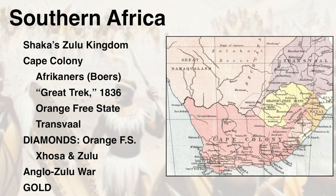Their lands were given then to white ranchers. The discovery of gold in the Transvaal — one of the Boer territories — created a gold rush, and soon enough the British outnumbered the Boers.